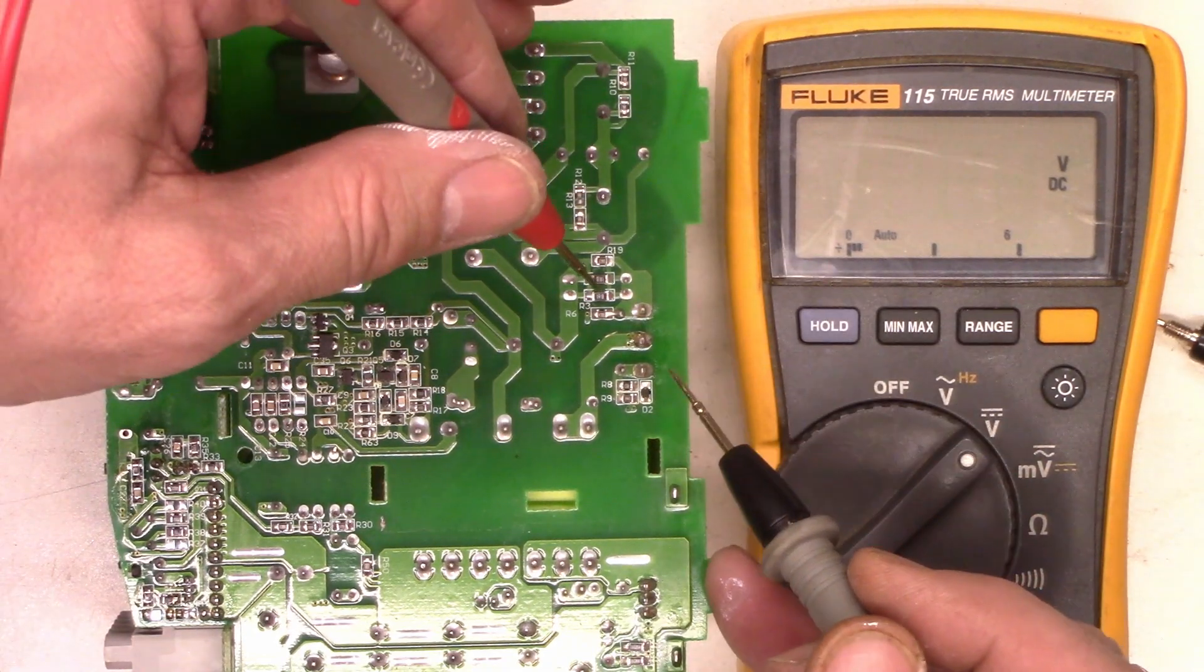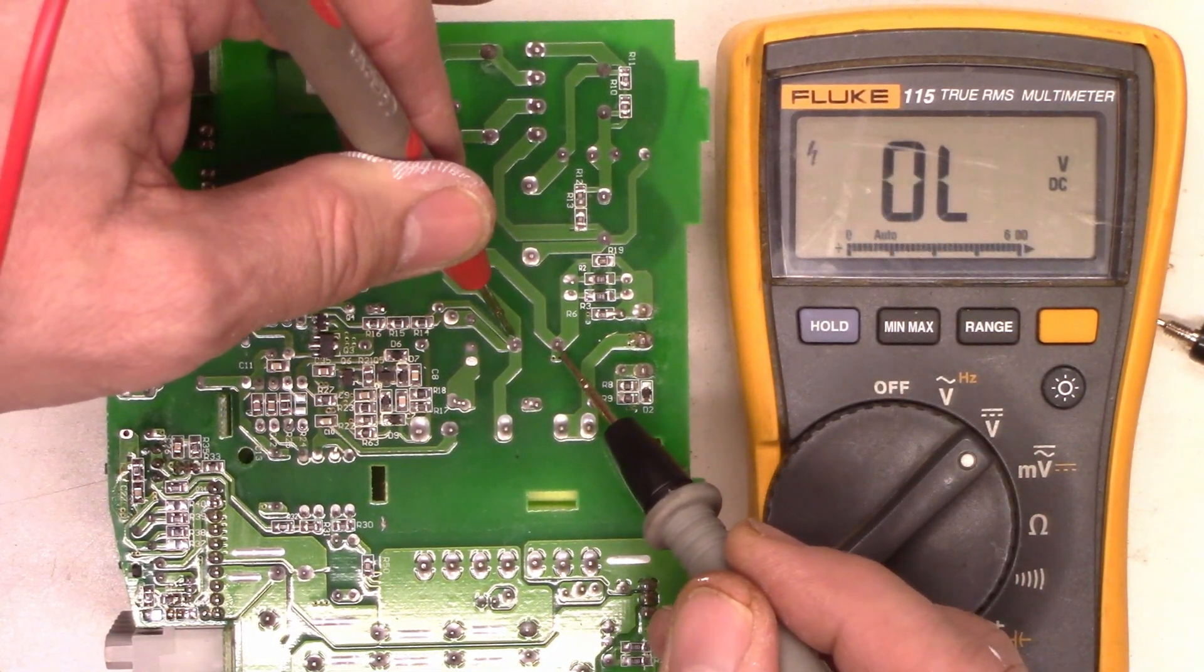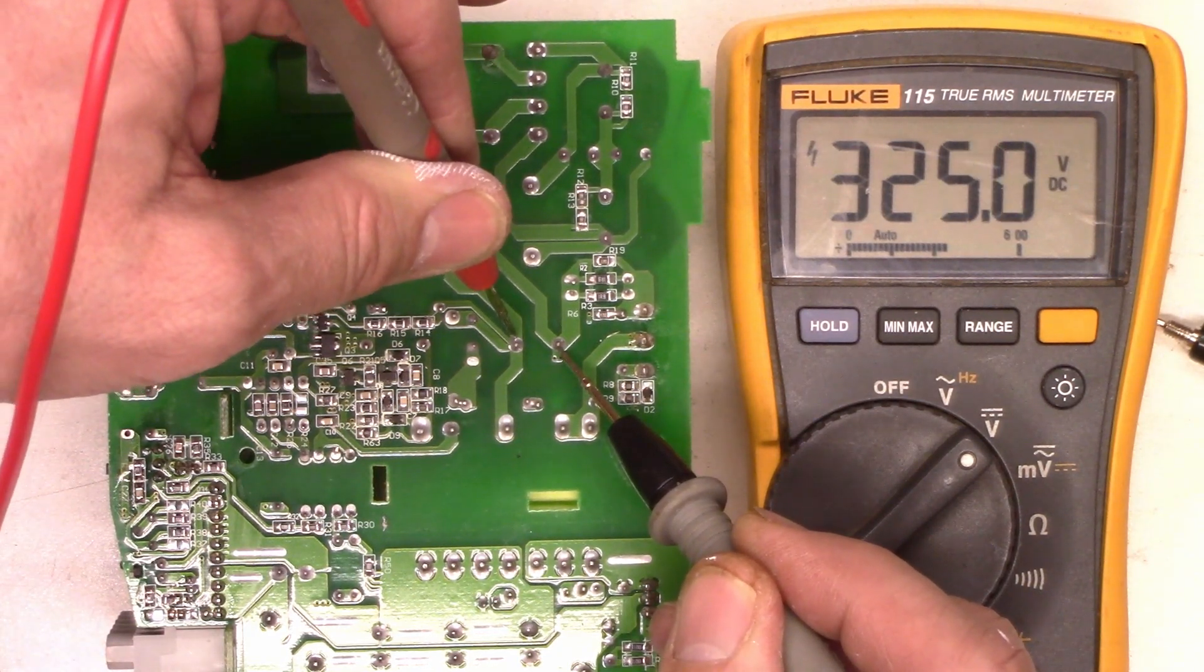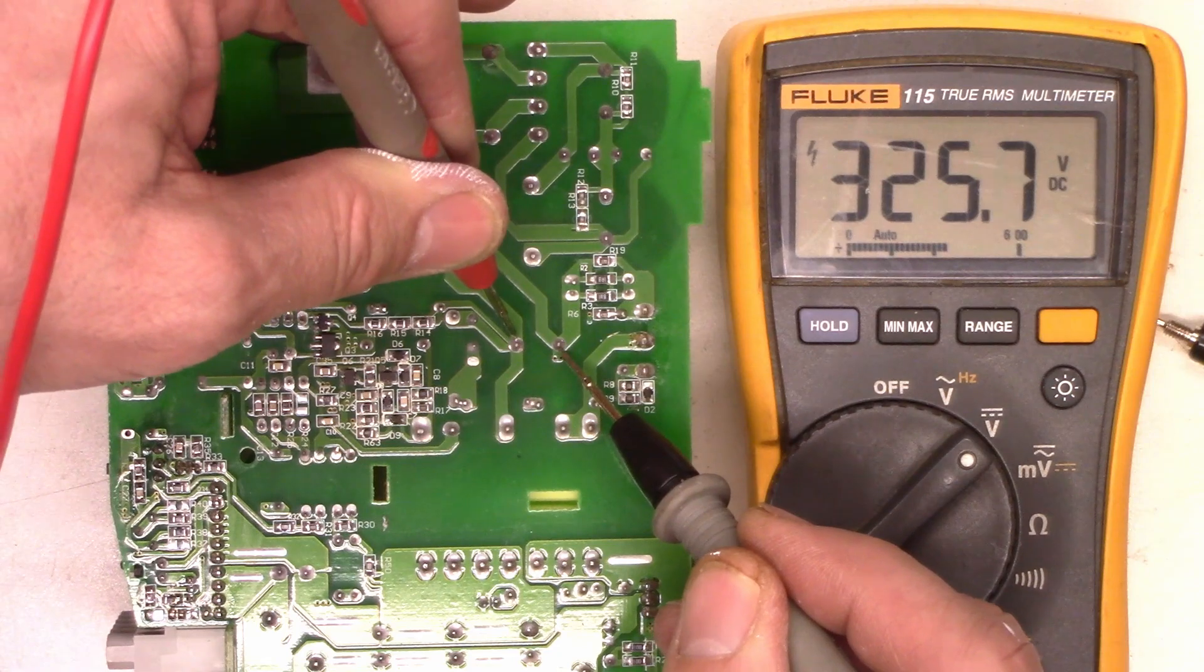And so after power factor correction, I'll be looking at this capacitor right here. And I see 326 volts. So it does look like it's doing a little bit of power factor correction going on here.